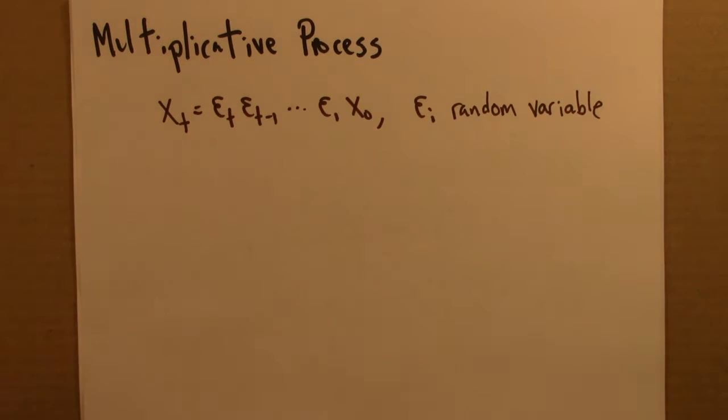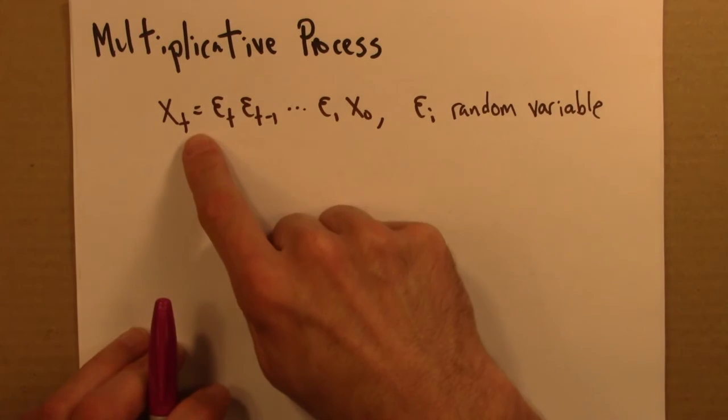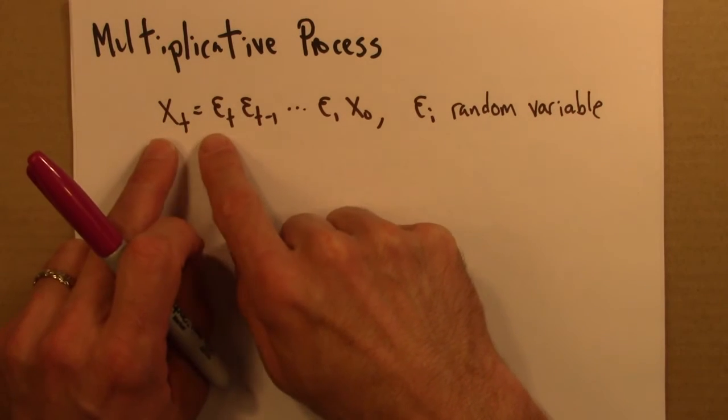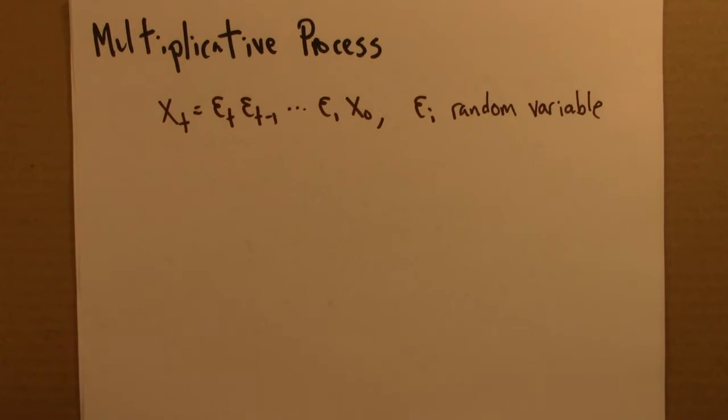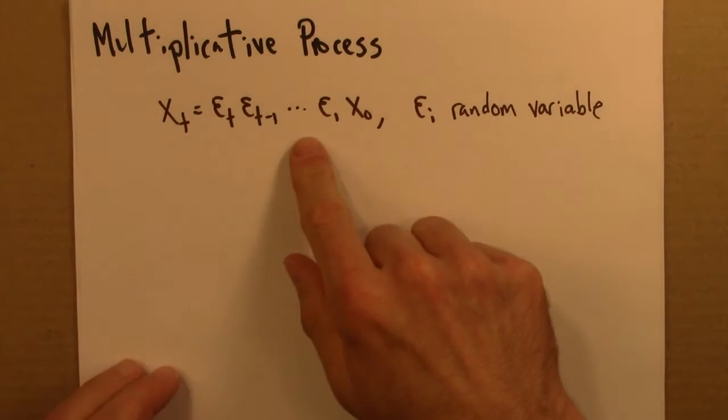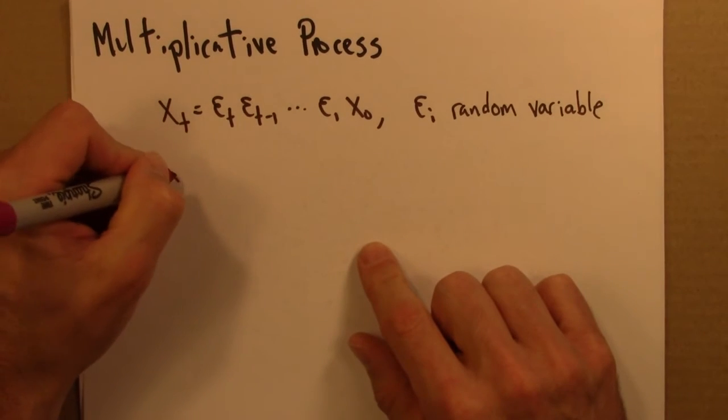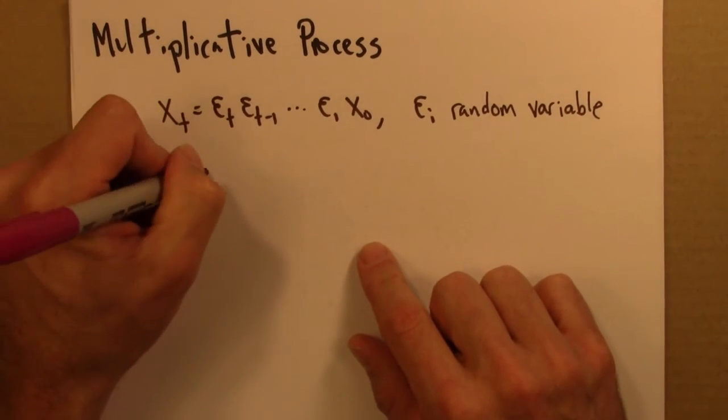As I've already said, we have a multiplicative process, some random variable that arises from multiplying a bunch of other random variables together, we tend to get something that's log-normally distributed.